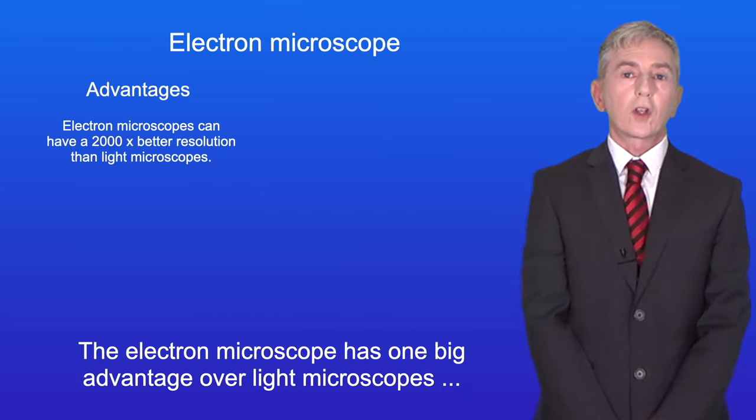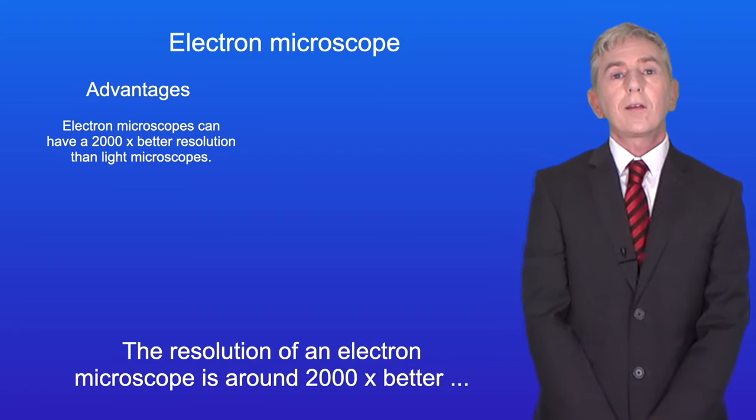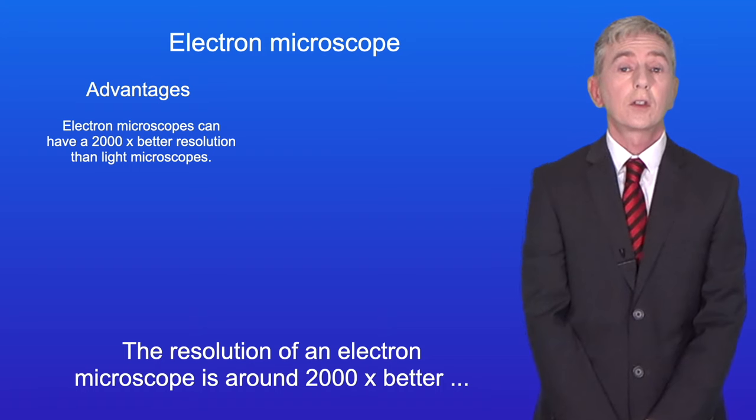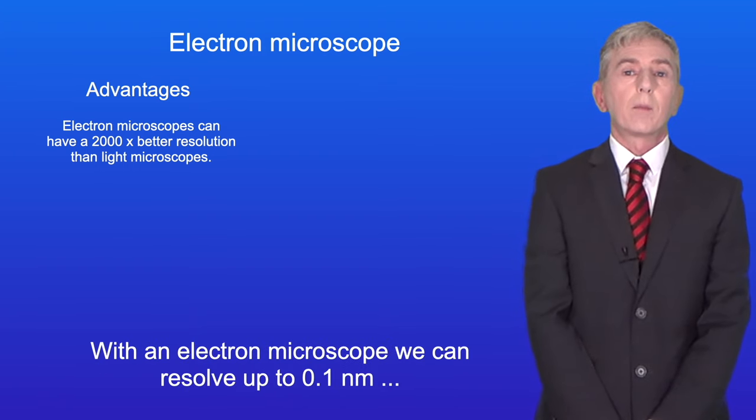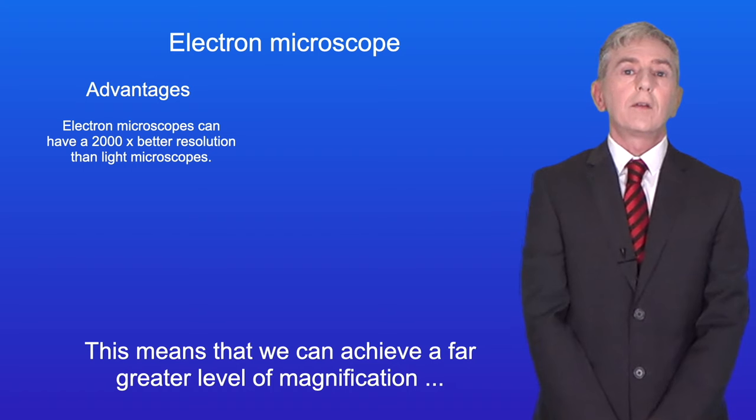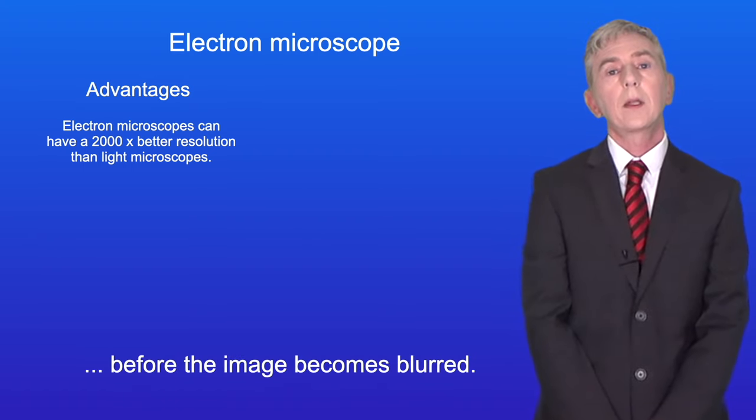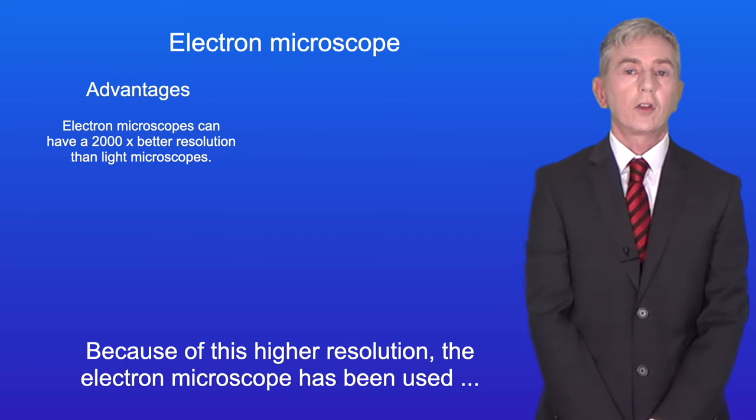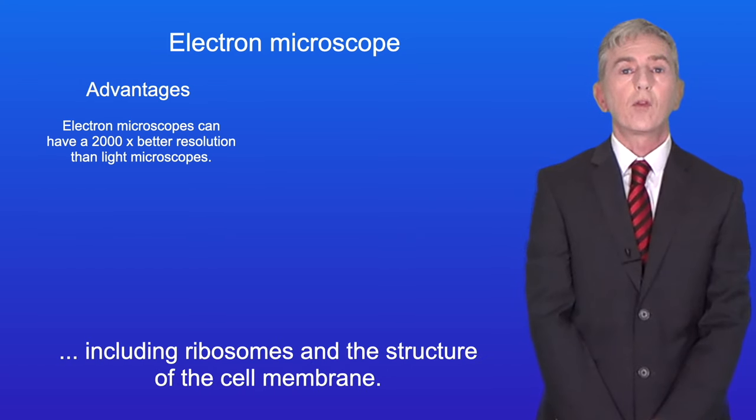The electron microscope has one big advantage over light microscopes: resolution. It's around 2000 times better than a light microscope. We can resolve up to 0.1 nanometers under good conditions, meaning we can achieve far greater magnification before the image becomes blurred. Because of this higher resolution, the electron microscope has been used to make major discoveries in biology, including ribosomes and the structure of the cell membrane.